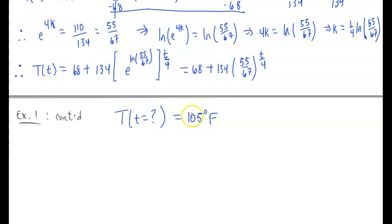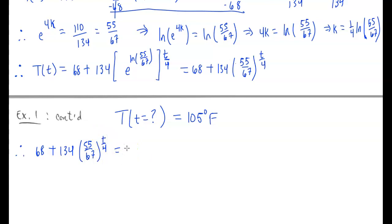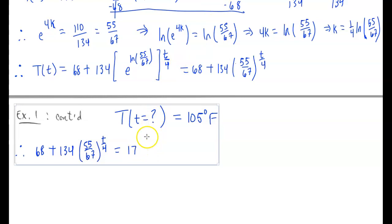So we need to solve: 68 + 134·(55/67)^(t/4) = 105 for t.